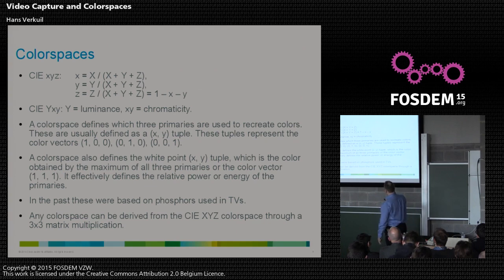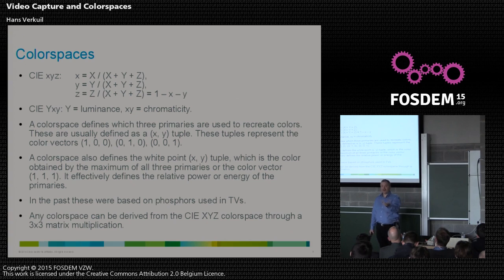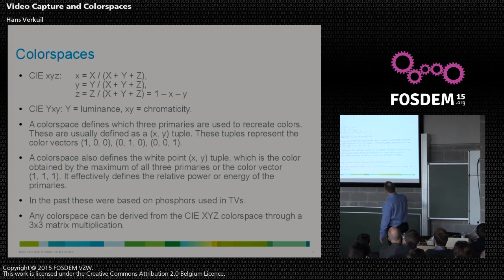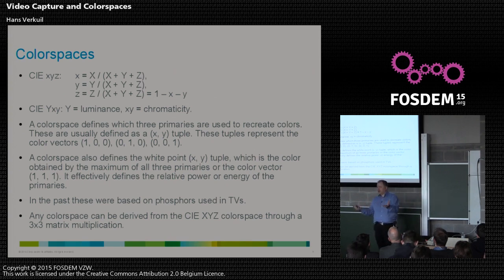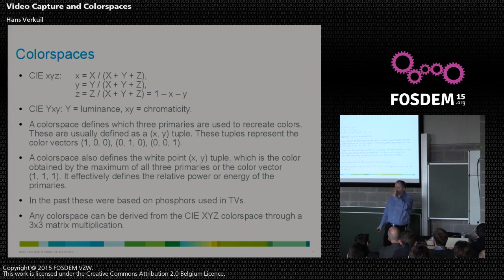You also need what's called the white point. That says: what color do I get if I turn on all three lamps at maximum? If you have RGB fully on, you should get white — but there are many tints of white. So you can actually specify which white you want.